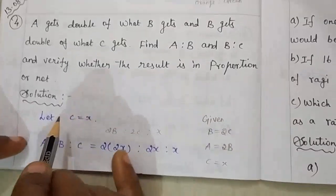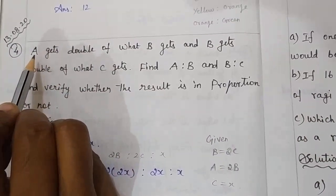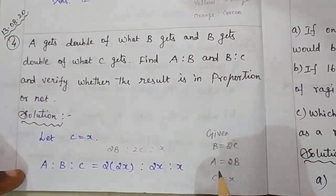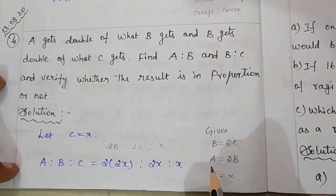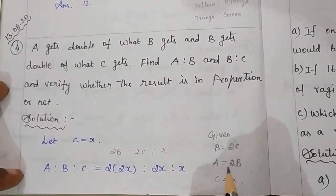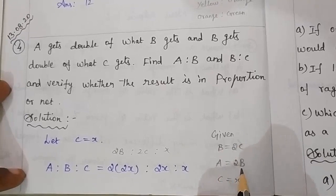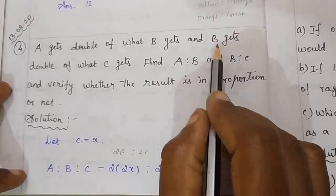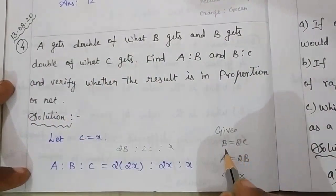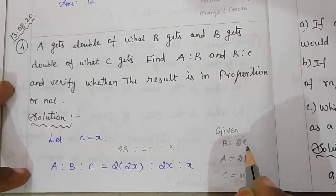In the given sum, A gets double of what B gets, so A is equal to 2B. Next, B gets double of what C gets, so B is equal to 2C.